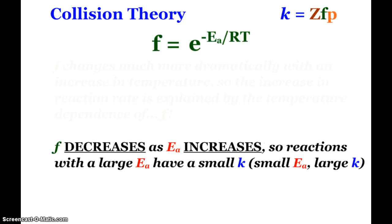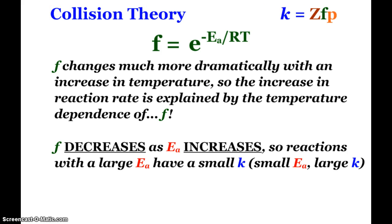F has this equation: F equals e to the negative Ea over RT. Ea is the activation energy, R is the gas law constant, and T is temperature in Kelvin. We don't do plug and chug math with this, but it's to explain. F changes much more dramatically with an increase in temperature. The increase in reaction rate is explained by the temperature dependence of F. Z had a small effect; F is where the dramatic effect takes place.